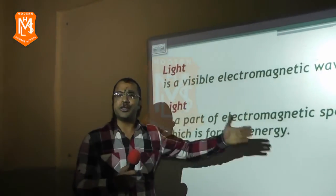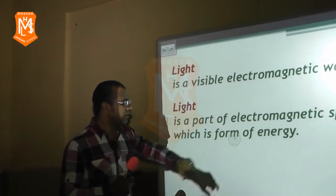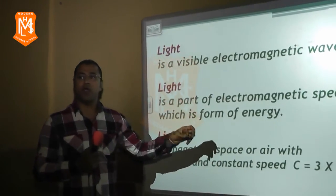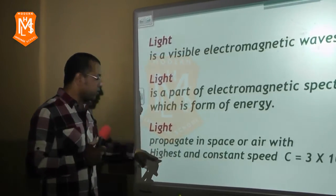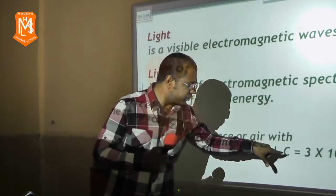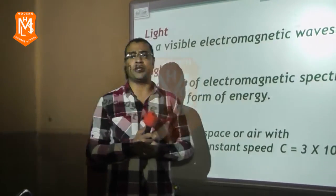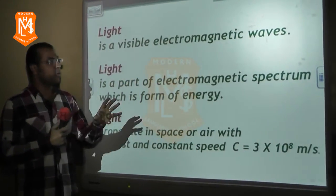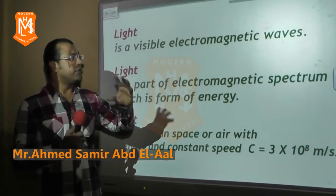The third point: Light propagates in space or air with the highest and constant speed, denoted by c, which equals 3 × 10^8. Before talking about the properties of light, we have to understand the nature of light.